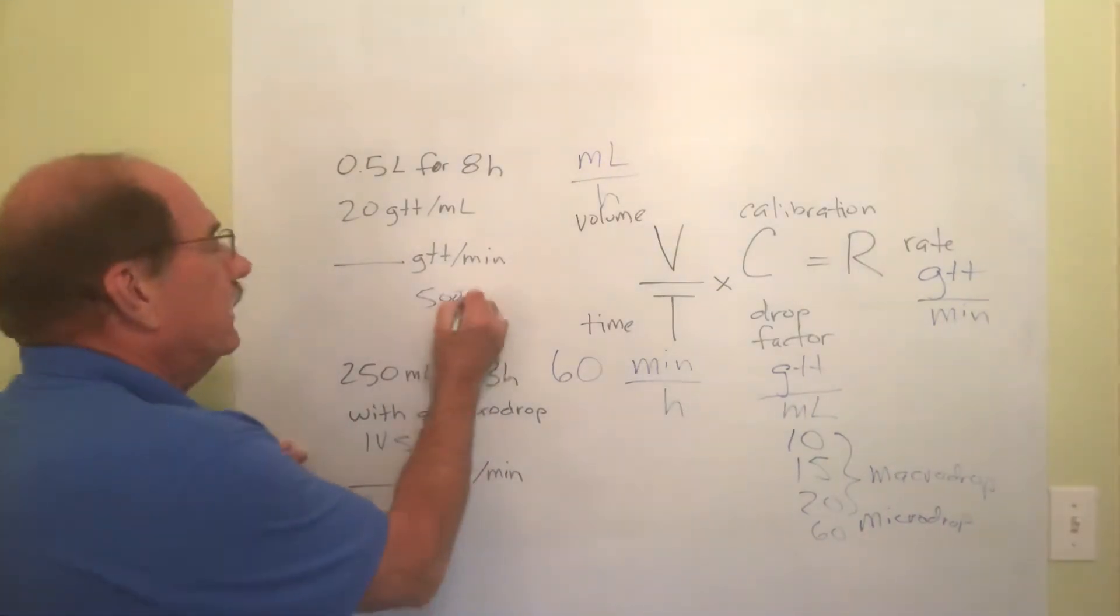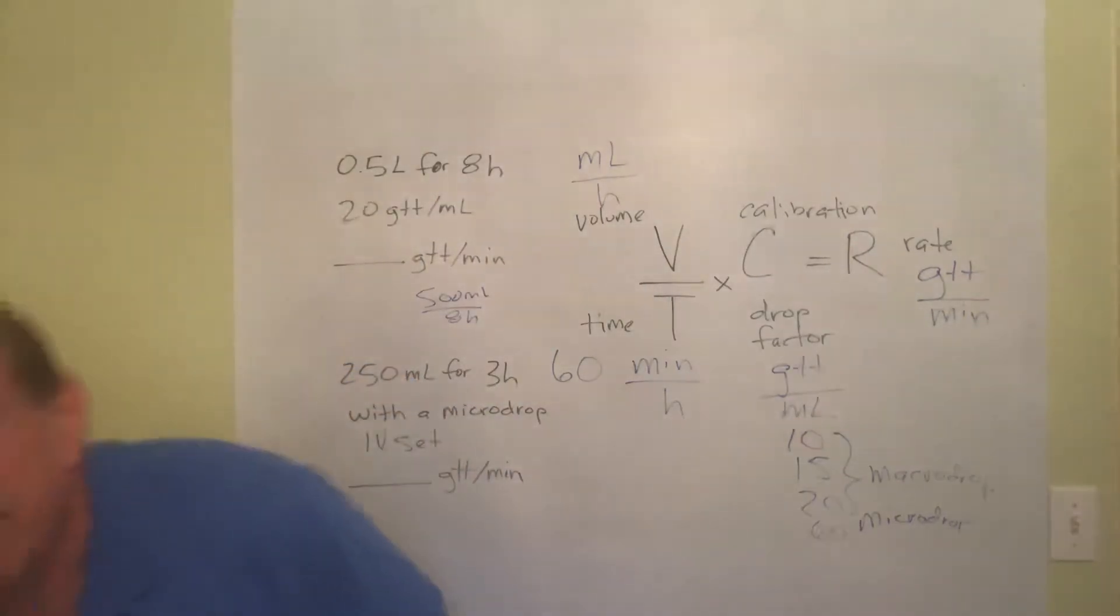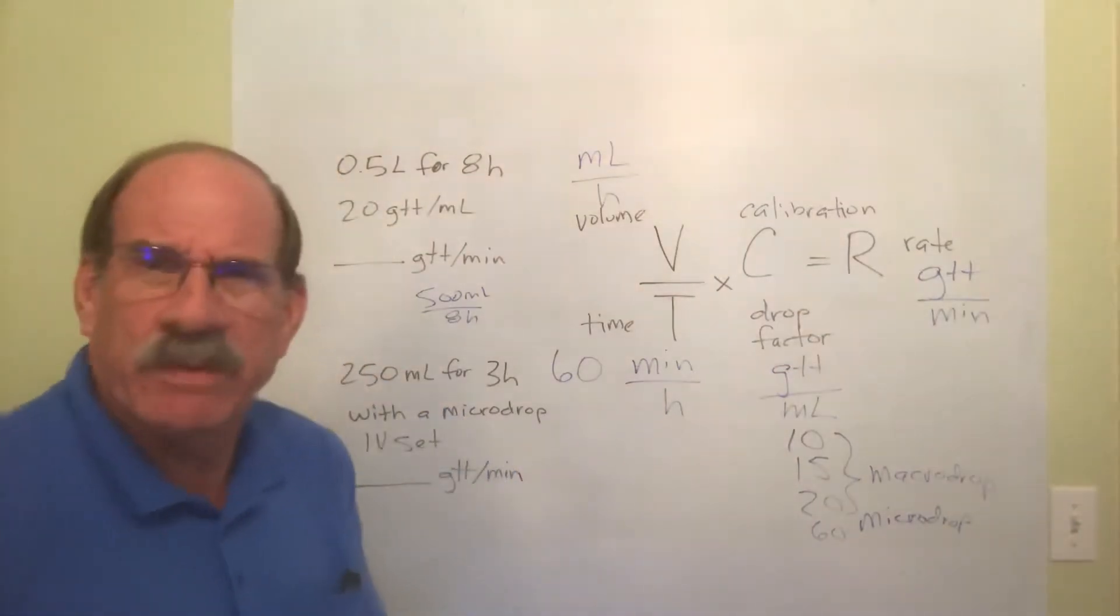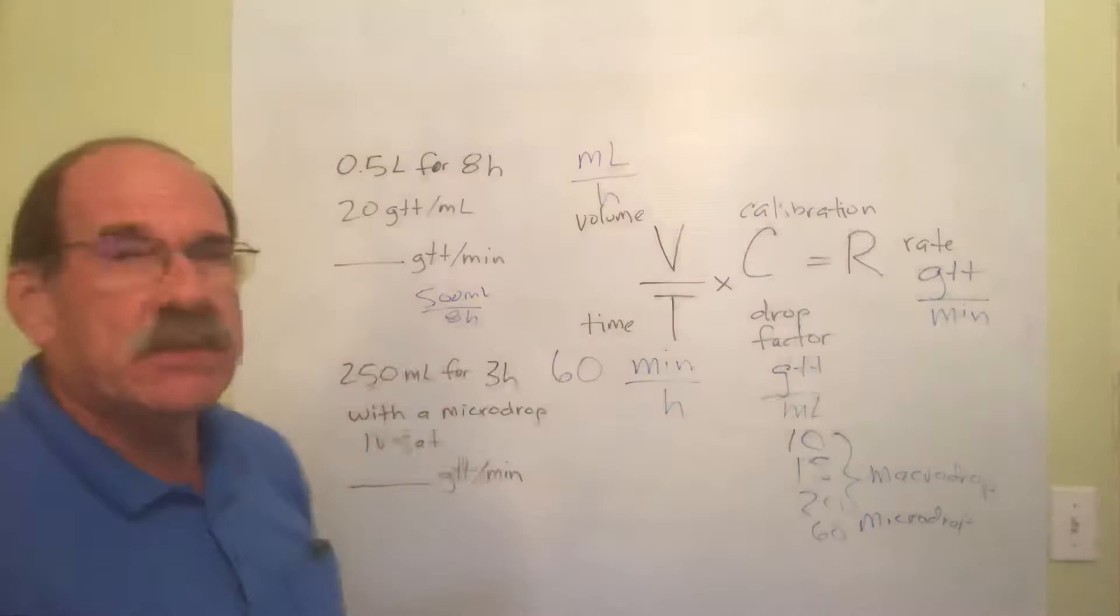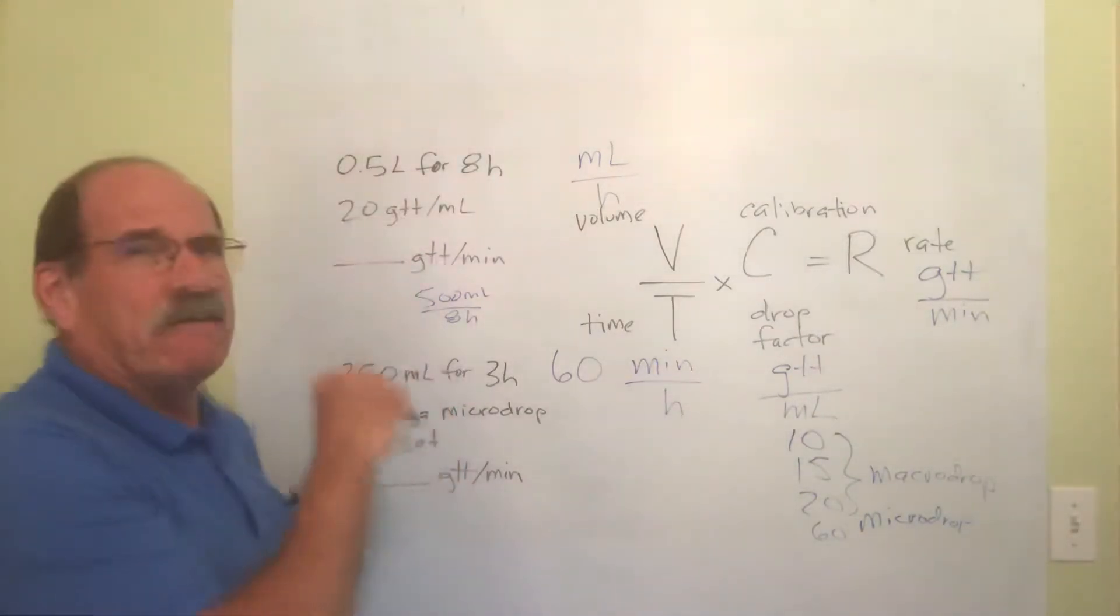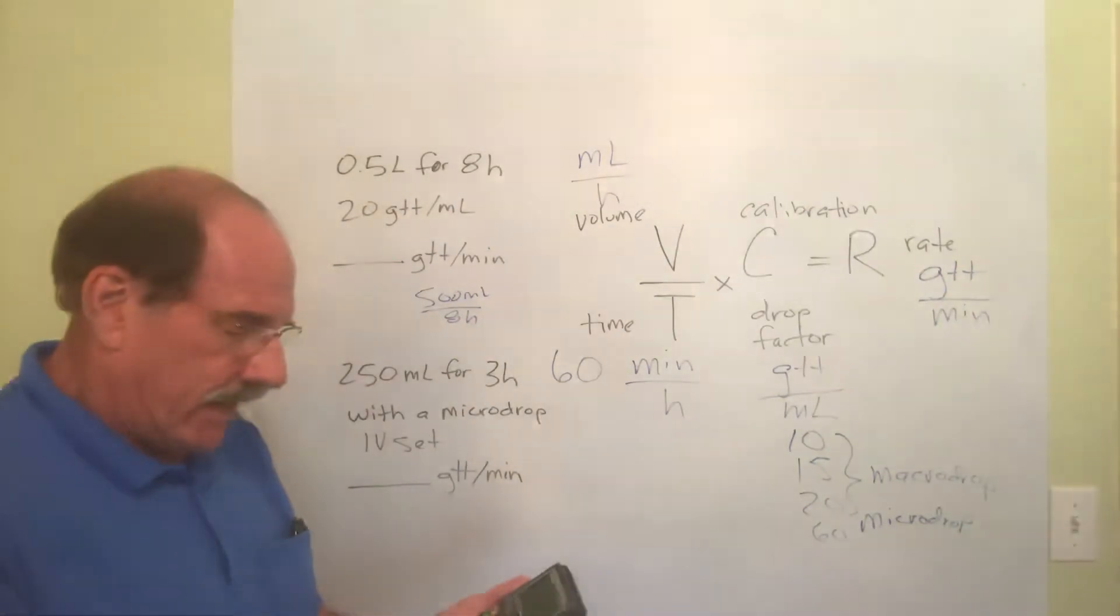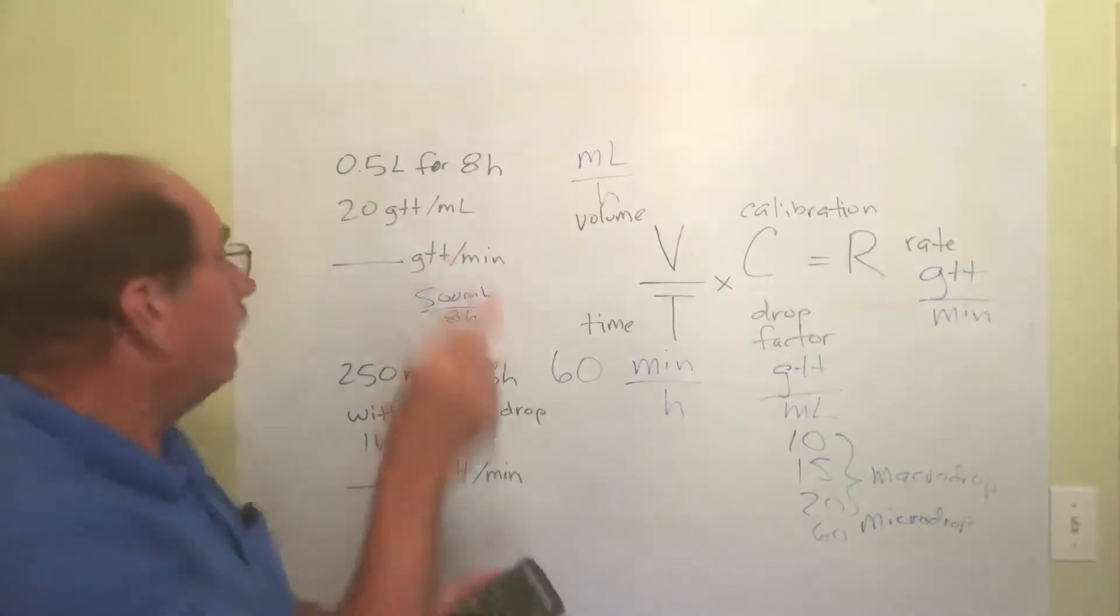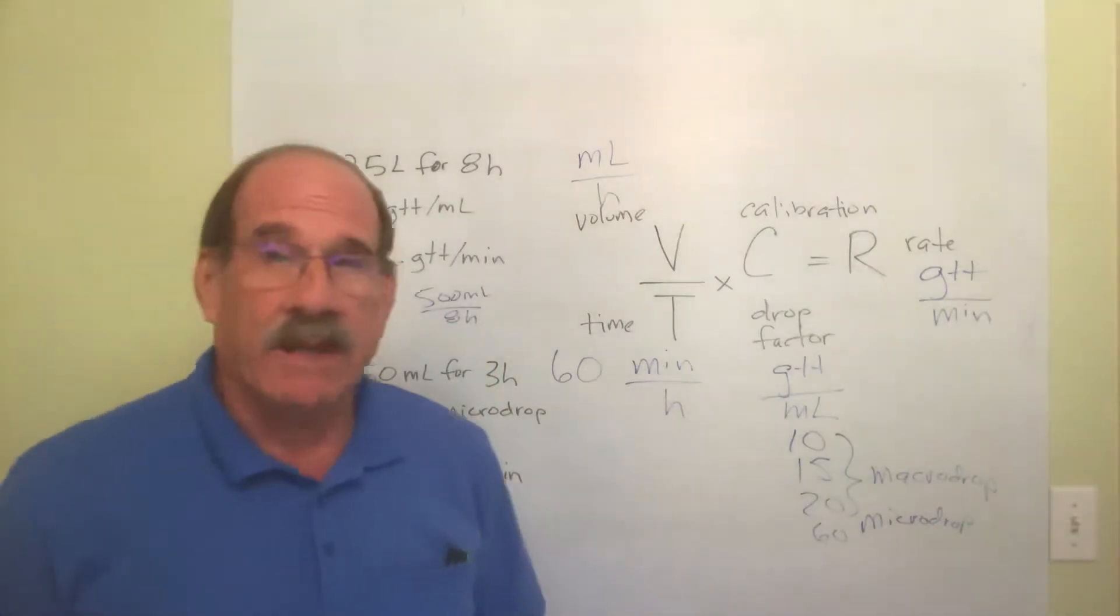So 500 milliliters divided by eight hours. What a sloppy bunch of junk. You'd think they'd hire some more competent teachers around this place. Got to hire a Dudley guy. So we take, and I see people doing this, don't use 0.5, that's liters. We need milliliters. So 500 milliliters divided by eight hours. Now that is 62.5.